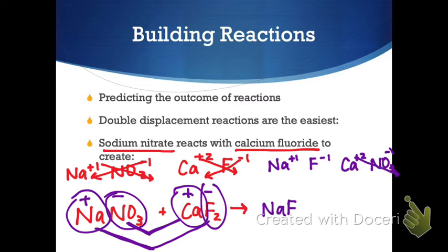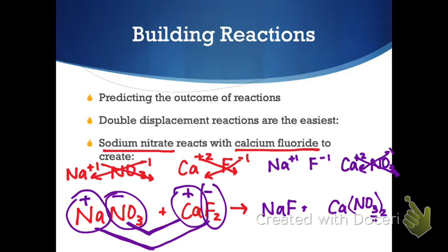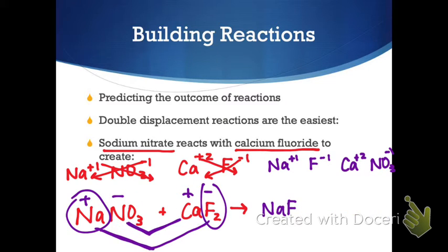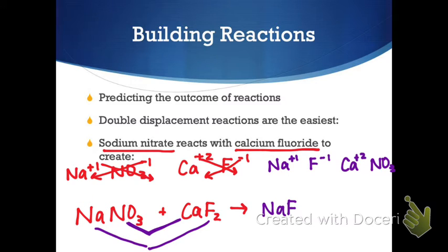For calcium nitrate, I crisscross the charges down, which gives me Ca(NO3)2 — I need parentheses because I need two of those nitrates. I will never adjust the subscript within the nitrate itself. Once you have a polyatomic ion like SO4, NO3, or PO4, that part of the polyatomic ion is never adjusted. Now I have all my formulas written correctly.